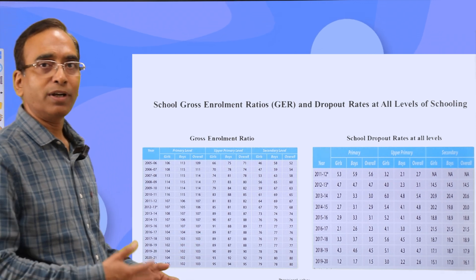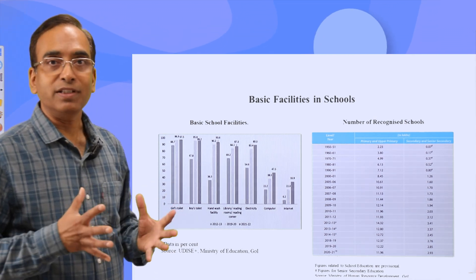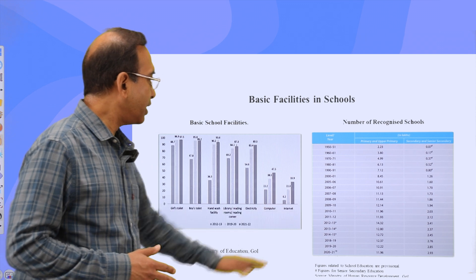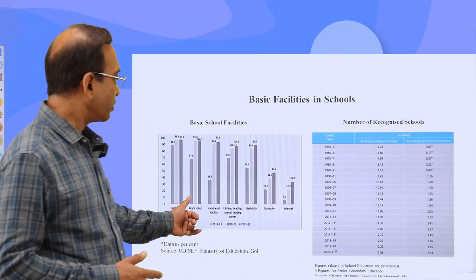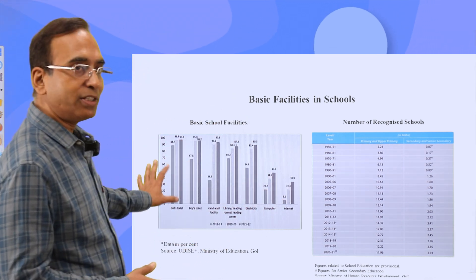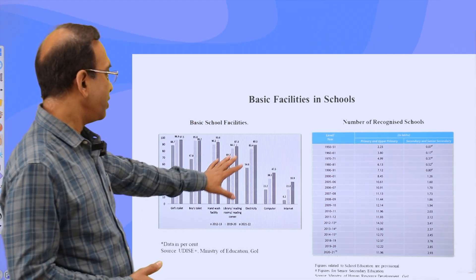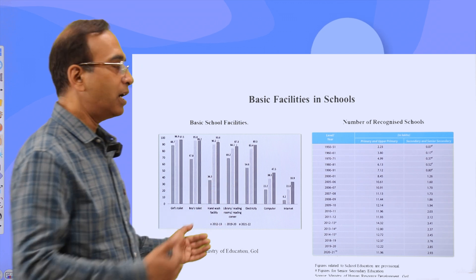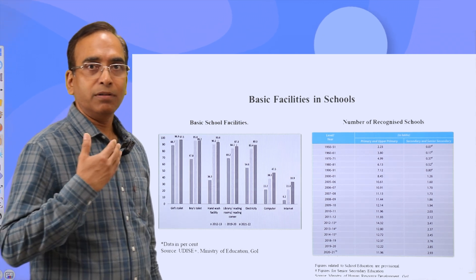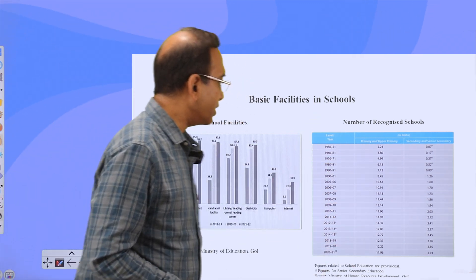One very important area is infrastructure facilities. You can see data on toilets, handwash facilities, libraries, electricity, computers, and internet access — with three bars showing a significant jump in every area. Almost 99.7% of schools now have toilets and handwash facilities, and libraries have reached almost 87%. Our main target in the next few years is to bring computers and internet to every school, so that even poor children are exposed to modern education. The number of recognized schools has also increased significantly.